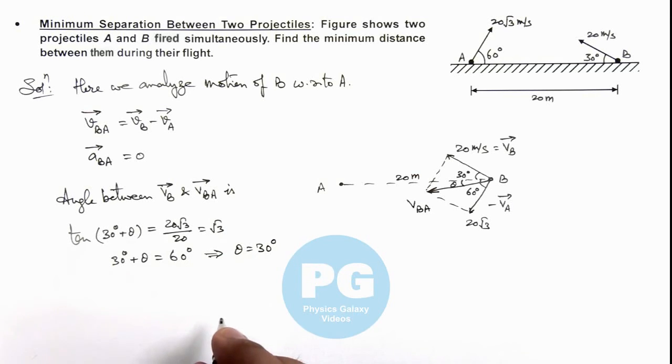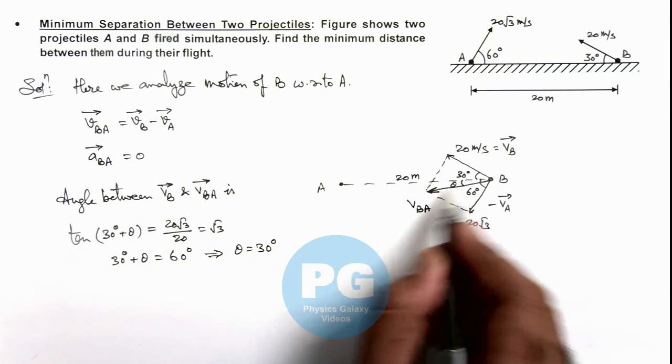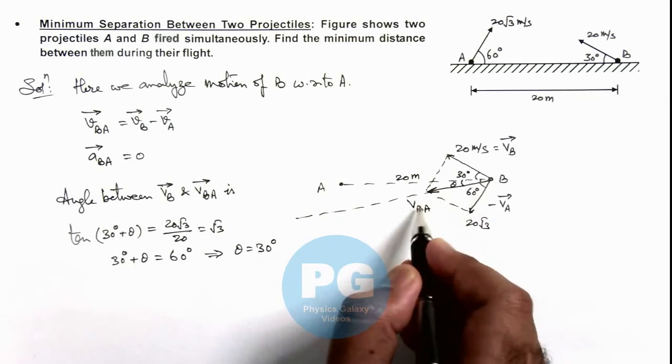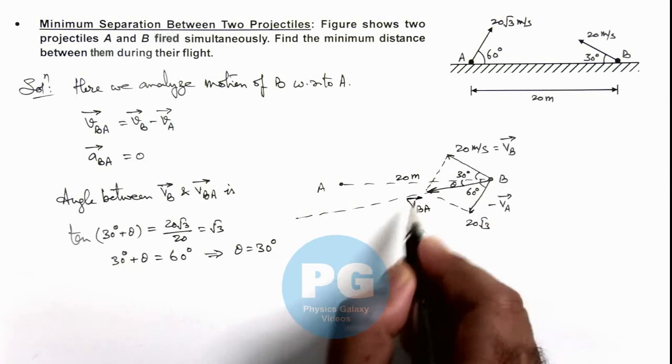Now in this situation if theta is 30 degrees, with respect to A, B is moving along this line, that is along the direction of v_BA vector.